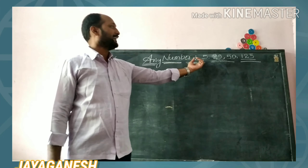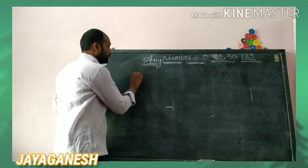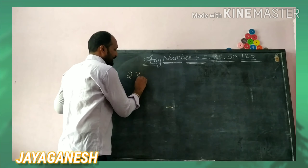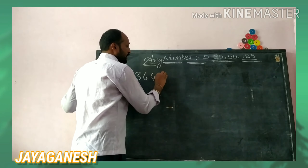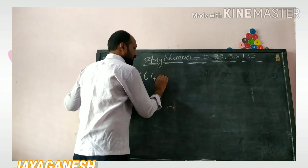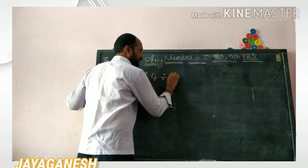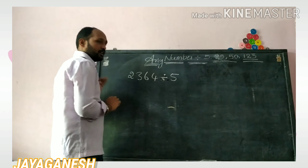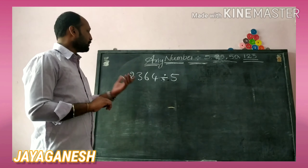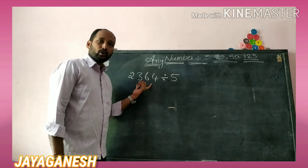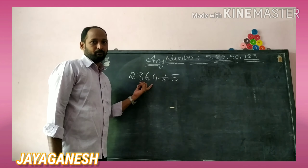The first topic we are taking is division by five. For example, if I am taking 2364 divided by five — when you are going to divide by five, it is very simple: whatever the question is given, you make it double and apply the balancing rule.